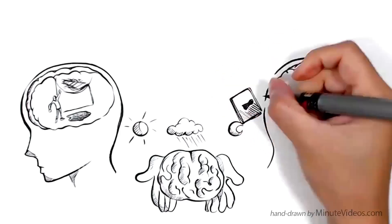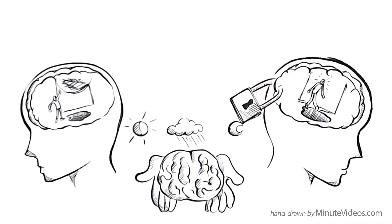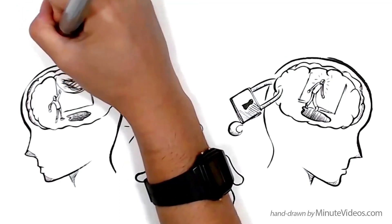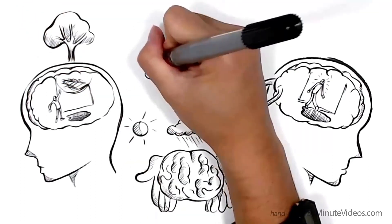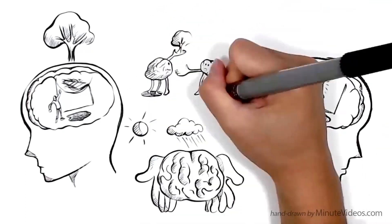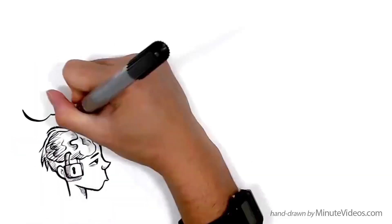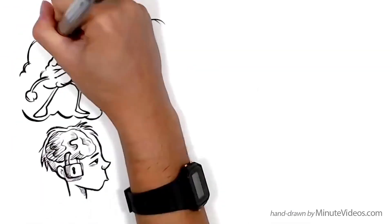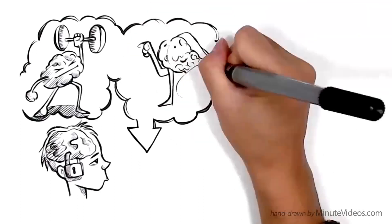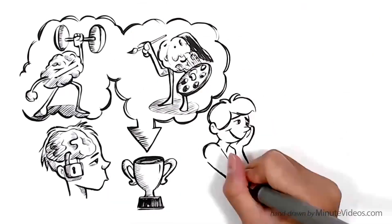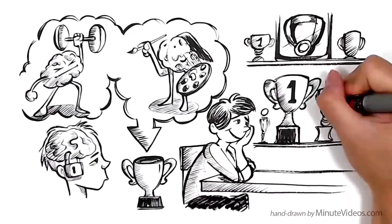People that avoid conflicts can be described as having a fixed mindset. They believe that basic qualities, like intelligence or talents, are fixed traits, and that these traits are responsible for success. They often like to document past achievements.